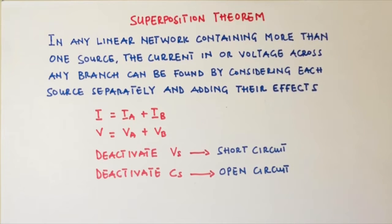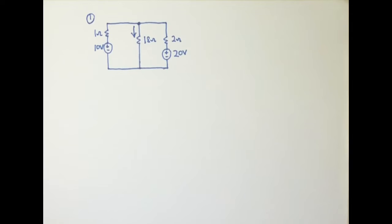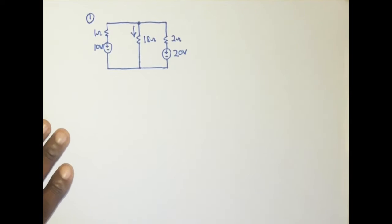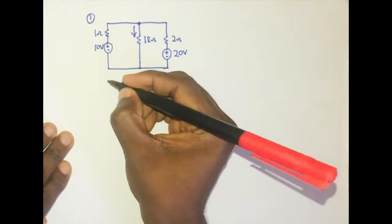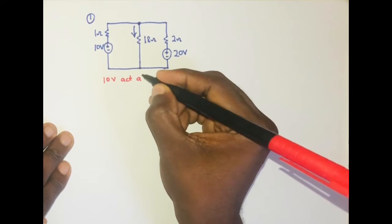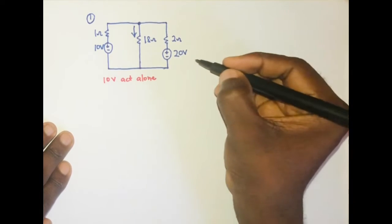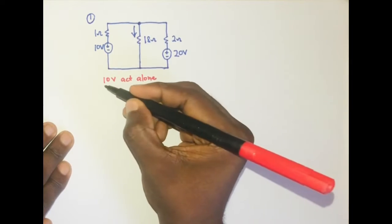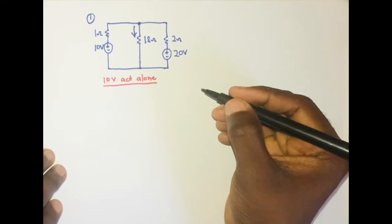Let's solve our first example. In this example, we have two voltage sources: 10 volts and 20 volts, and three resistors connected in the circuit. We need to find the current flowing through the 18-ohm resistor using superposition. To solve this, we first deactivate one of the sources. Let's let the 10 volts act alone, which means we are going to deactivate the 20-volt voltage source.